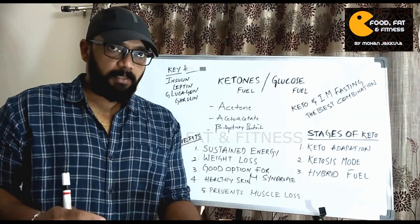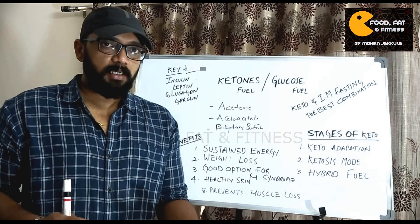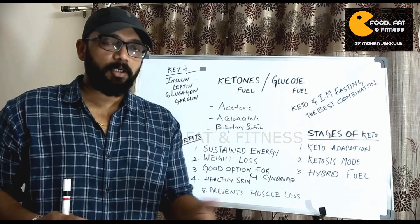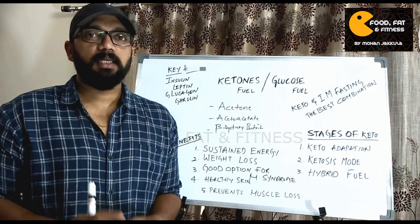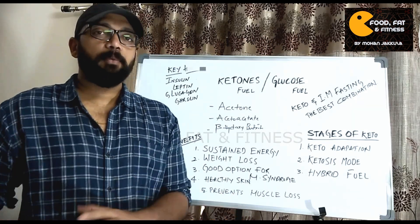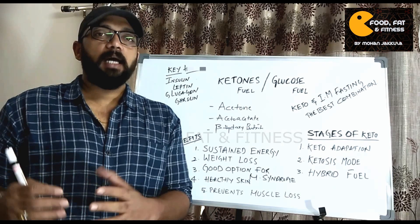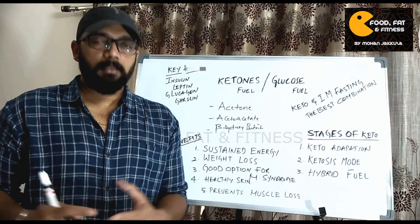At the cellular level, in the mitochondria, ATP production occurs through fat burning and combustion.